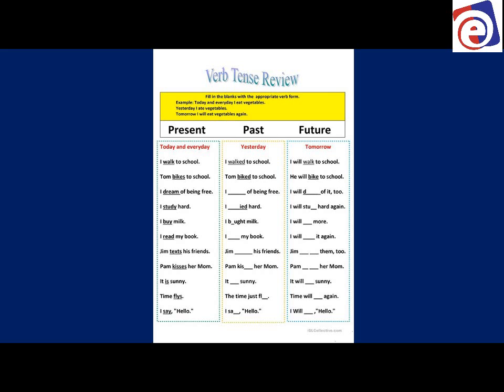On the slide you're going to see three columns: present, past, and future. Present is today and every day, past is yesterday, future is tomorrow. Present is right now. Present continuous is some action that is happening right now — for example, 'I watch the video every day' versus 'I'm watching the video now.'